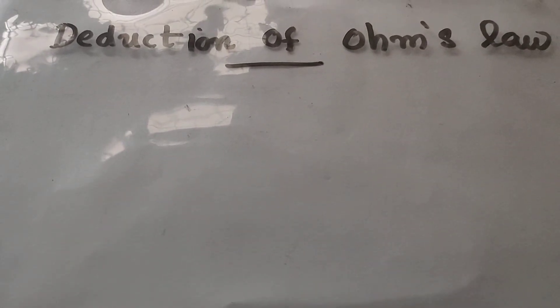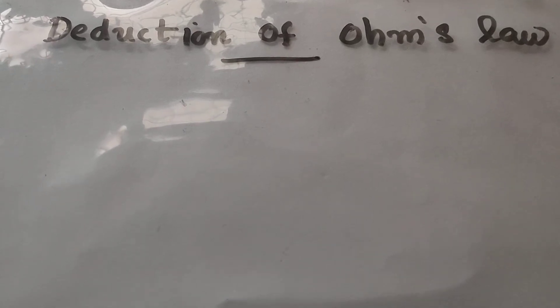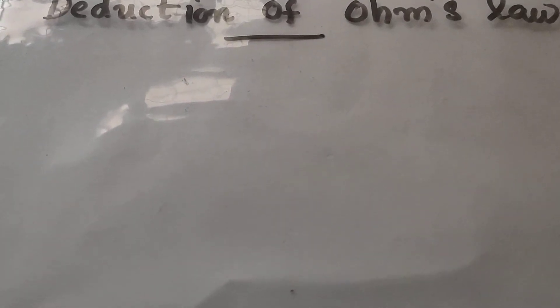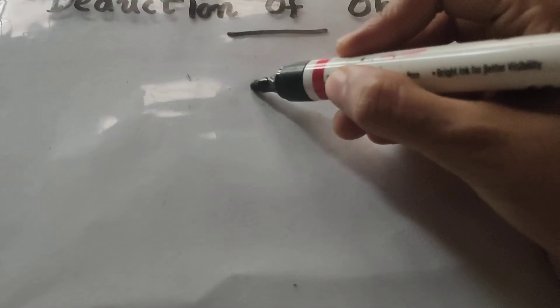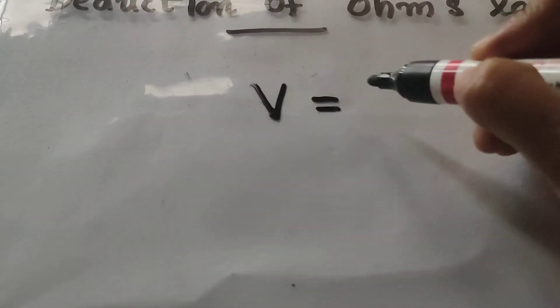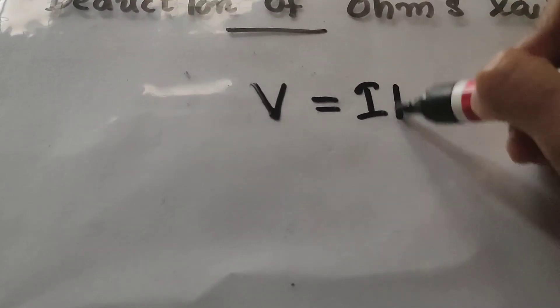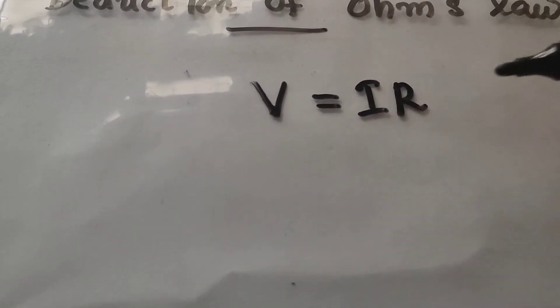Hi students, today we are going to study about how to deduce Ohm's law. We have studied about Ohm's law. Ohm's law gives a relationship between potential difference and electric current and it is given by V is equal to I into R where R is resistance.